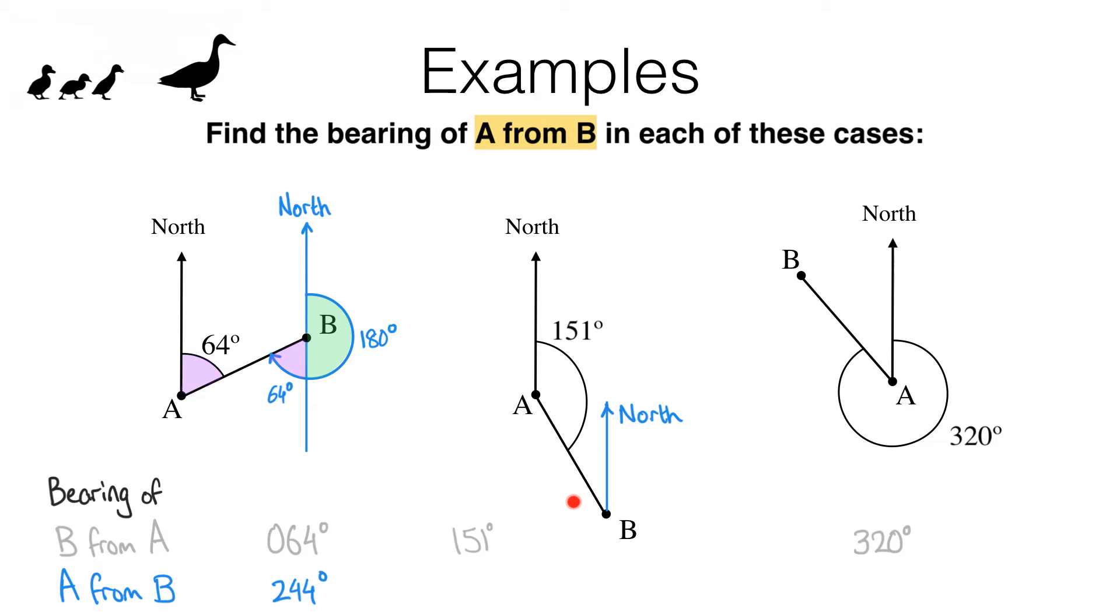this is the angle we're looking for. And like in the first example, I can split this angle up by extending this north line towards the south like this. We have a pair of alternate angles again, which means this one is 151 degrees.